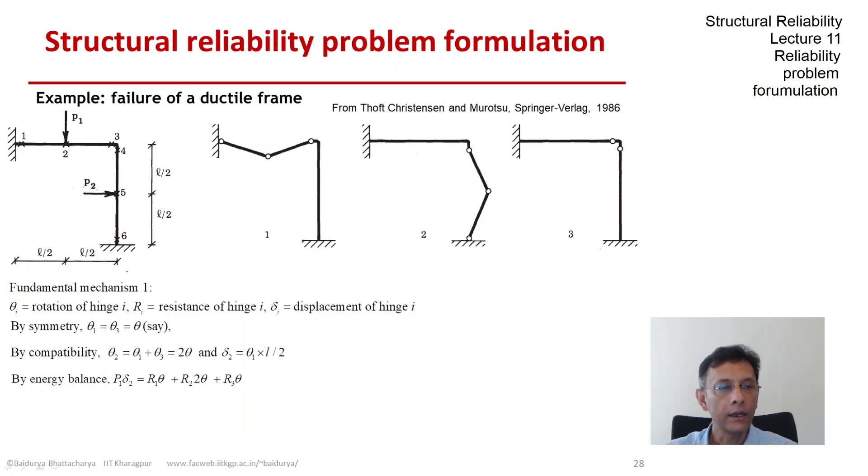With these things defined, we now invoke energy balance. The work done by P1, if it equals the work done by the hinges, we have this equation, and if we now express delta 2 in terms of theta, we get the limit state where the work and the energy are equal in terms of the equation that you see on this screen.